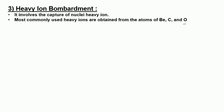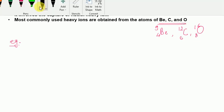The third method is the heavy ion bombardment method — a modern technique for synthesizing transuranic elements. It involves the capture of nuclei of heavy ions. The most commonly used heavy ions are obtained from beryllium (atomic number 4, mass 9), carbon-12, and oxygen-16. These heavy ions bombard naturally occurring uranium isotopes to synthesize new species.